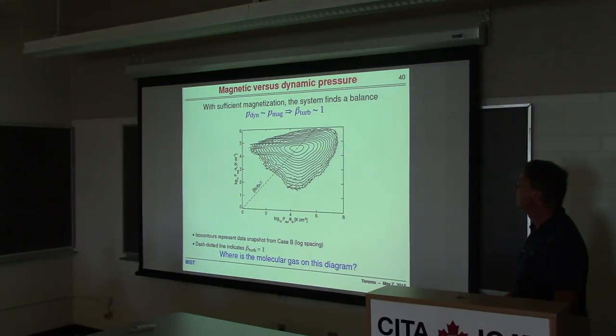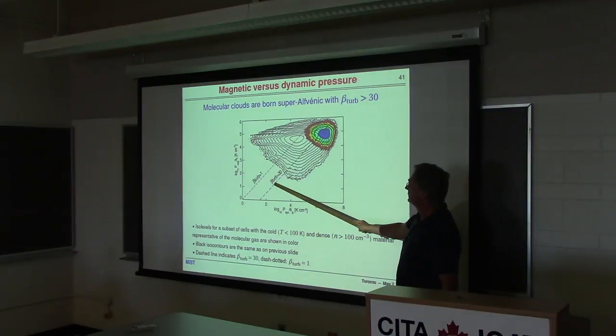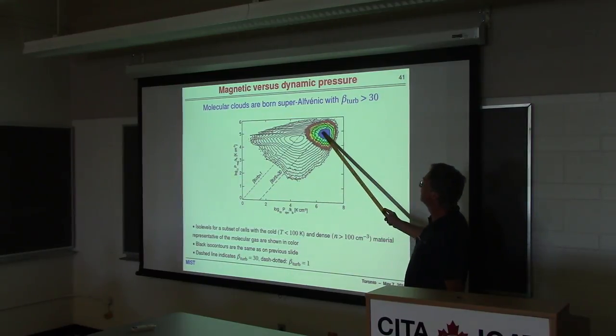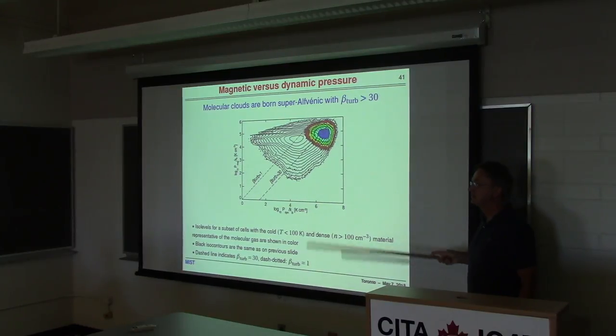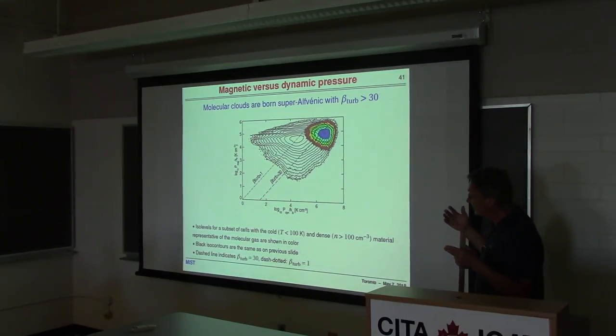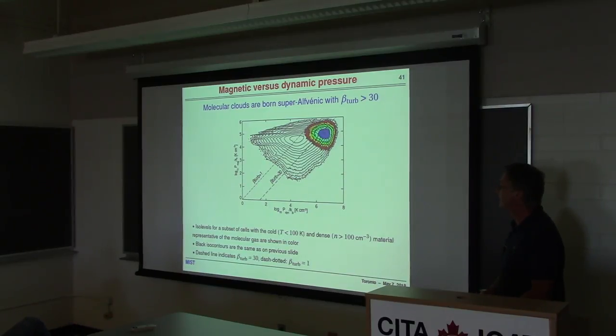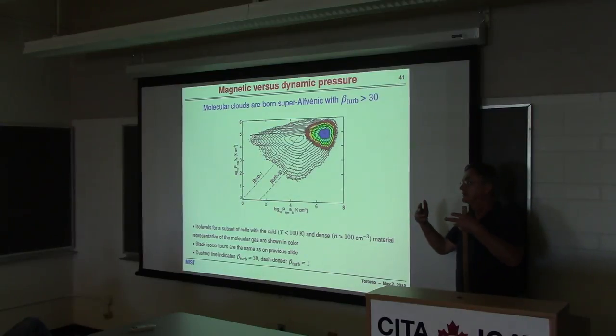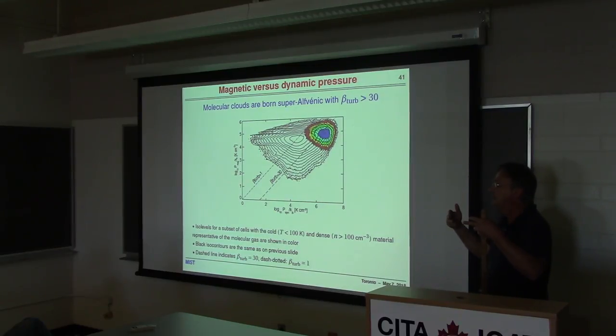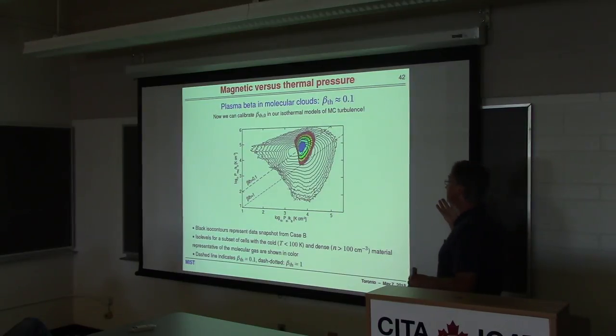We can think about whether we reproduce energy equipartition. This scatterplot of magnetic pressure versus dynamic pressure shows the mean is roughly here, meaning there's energy equipartition. I call this beta turbulent, about 1. So where do we have molecular clouds in this world? The answer is simple - they lie in the corner. Turbulent beta for molecular clouds is 30, which means kinetic energy strongly dominates. This means the turbulence regime in molecular clouds is actually superalfvenic.